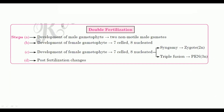Double fertilization involves development of the male gametophyte, development of the female gametophyte, and post-fertilization changes. The double fertilization process involves two steps: the first male gamete fuses with the egg cell, and the second male gamete fuses with the secondary nucleus, known as triple fusion.